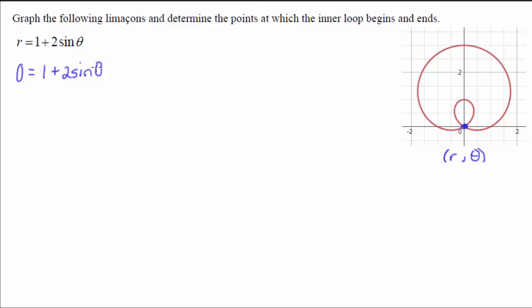And once we know what r is, that it needs to be 0, this is actually a simple trig equation to solve. So I would subtract 1 from both sides and get negative 1 equals 2 sine theta.